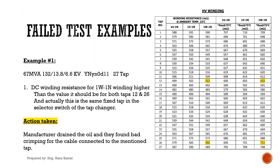From my field test experience, I will share some examples of failed tests. Our first example: a power transformer with 67 MVA, 132/13.8/6.6 kV, YNyN0D11 with 27 taps. The DC winding resistance for the 1W1N winding was higher than the expected value for both taps 12 and 26, which are the same fixed tap in the selector switch of the tap changer. The manufacturer drained the oil and found bad crimping for the cable connected to that tap.